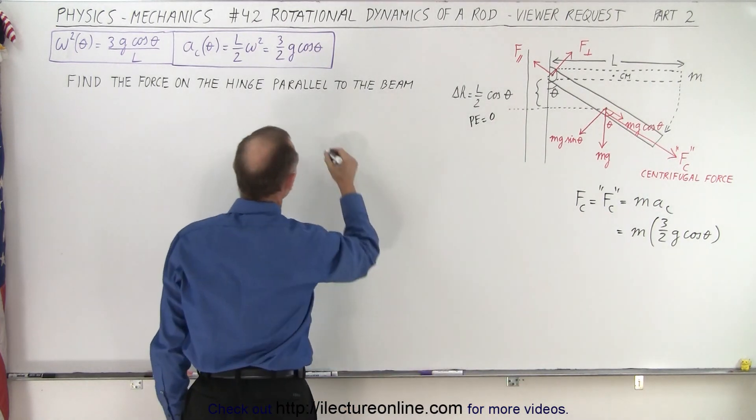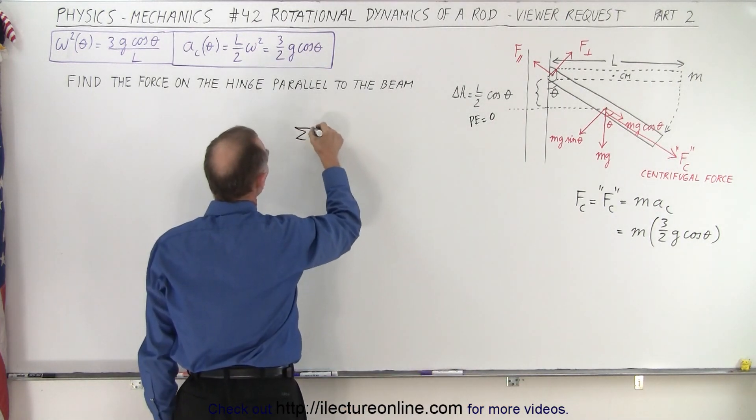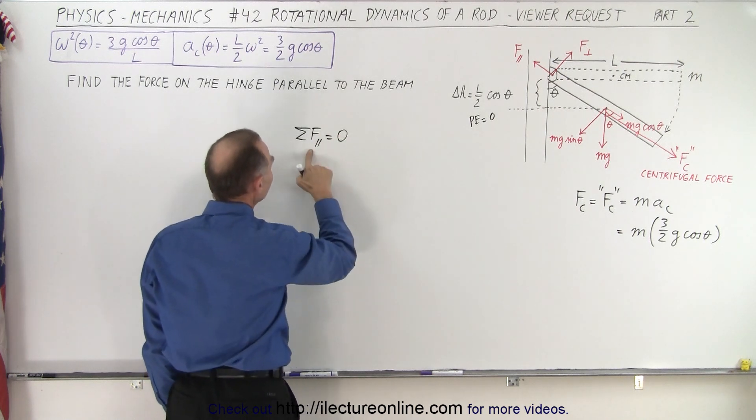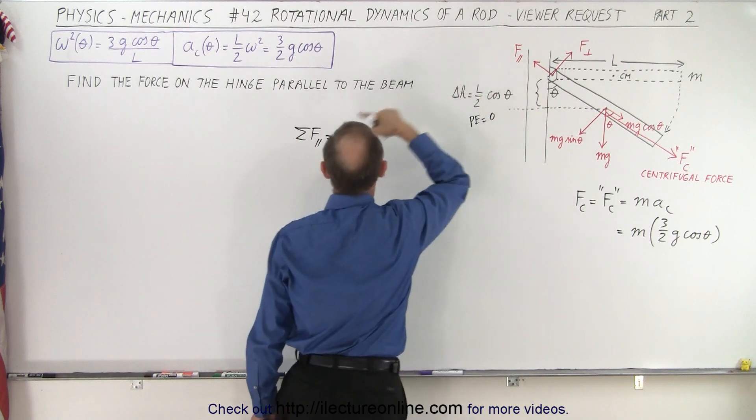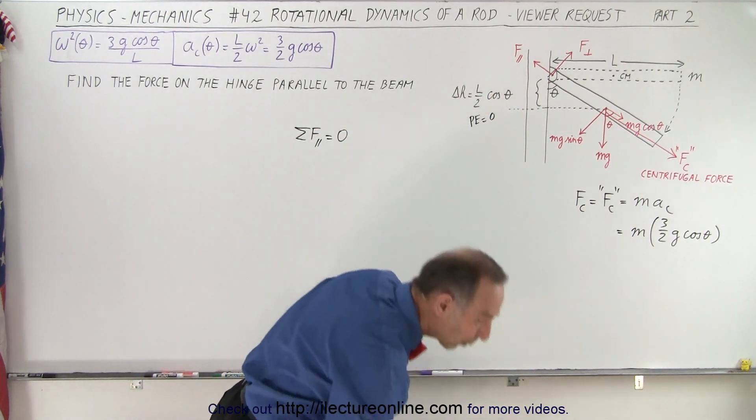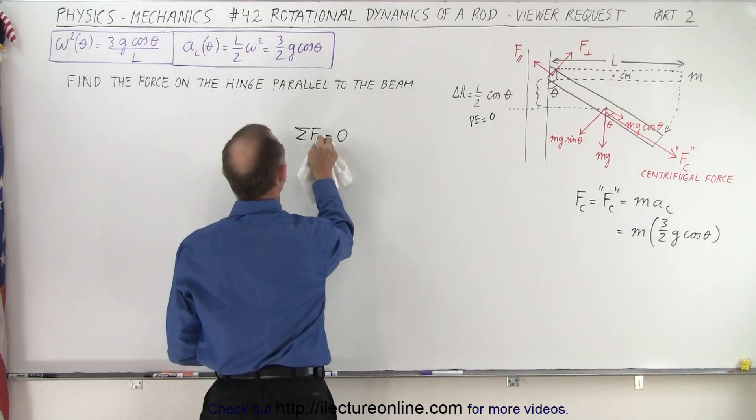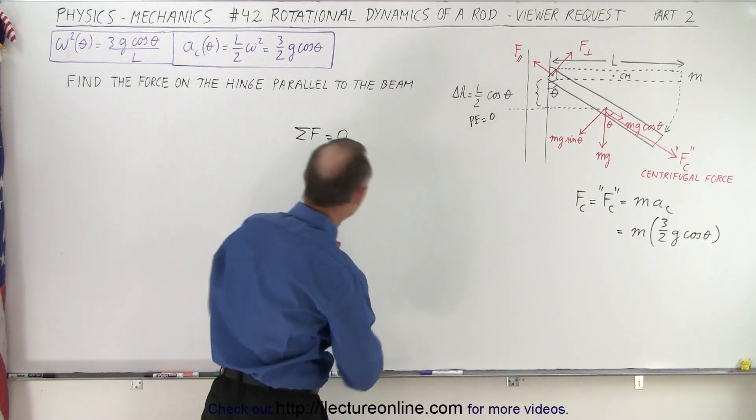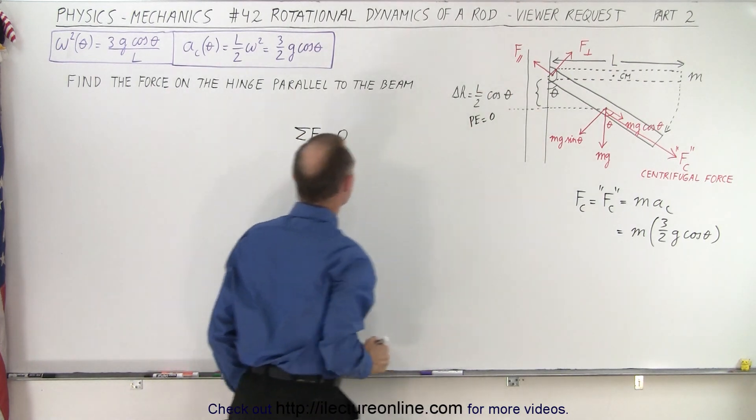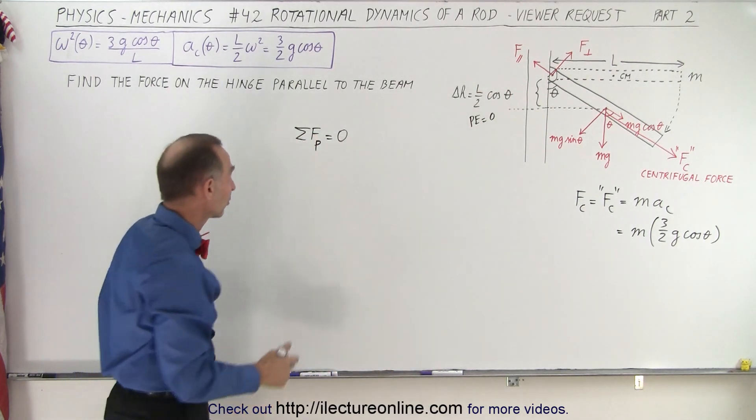And so that means that the sum of the forces in the parallel direction must add up to zero. Now I need to be careful not to get confused between this symbol and this symbol because they're not supposed to be the same. So the way to not get confused, what we're going to do is we're going to replace that with P for parallel so that this is not the same as that. All right, so let's add up all the forces.